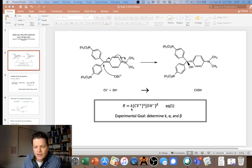The rate of the reaction is equal to the rate constant times the concentration of crystal violet to its order, which we'll call alpha, times the concentration of hydroxide to its order, which we'll call beta. The goal of this experiment is to determine the rate constant k, alpha, and beta.